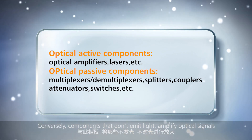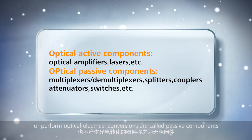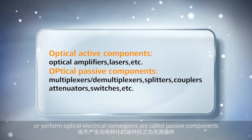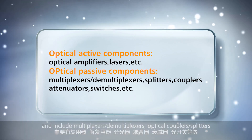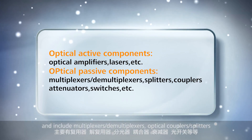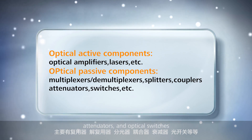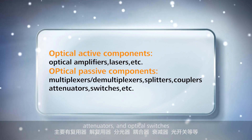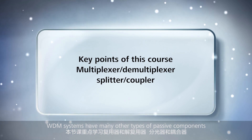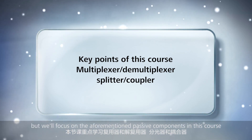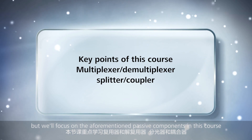Conversely, components that don't emit light, amplify optical signals, or perform optical-electrical conversions are called passive components, and include multiplexers, demultiplexers, optical couplers, splitters, attenuators, and optical switches. WDM systems have many other types of passive components, but we'll focus on the aforementioned ones in this course.